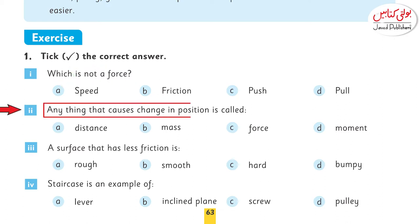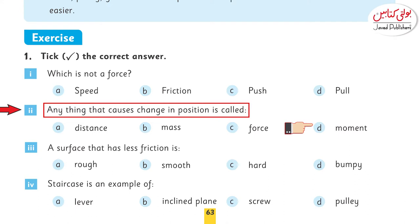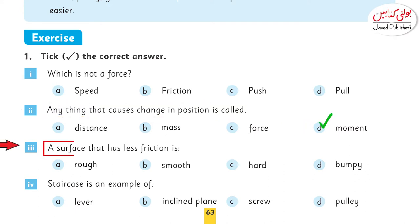Anything that causes a change in position — koi bhi cheez jo kisi bhi cheez ki position ko badalti hai — usko hum kya kehte hain? Options are: distance, mass, force, or movement. The right answer is movement.